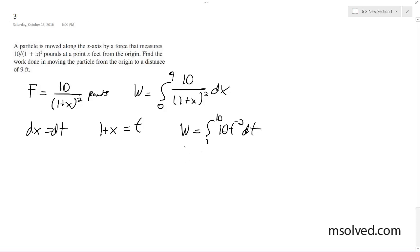Pull out the coefficient, so W equals 10 times the integral from 1 to 10. Oh, and the other thing I forgot to explain is when x equals 0, t equals 1, and when x equals 9, t equals 10.